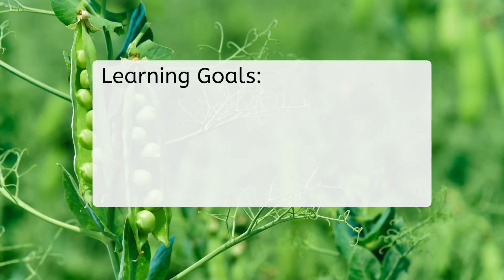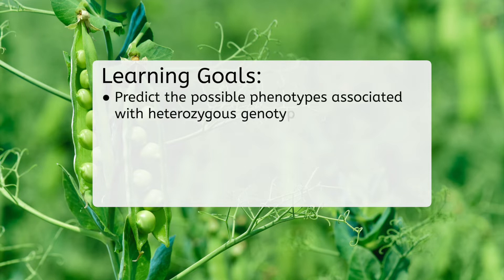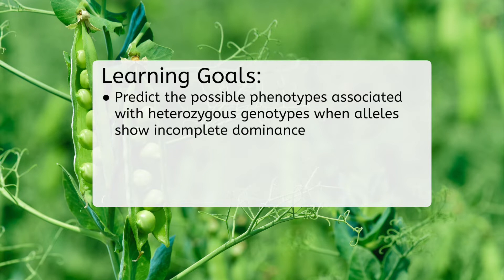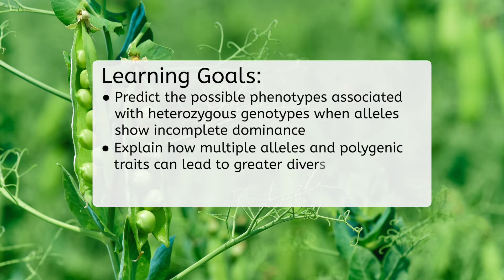Before we get started, let's look at our goals for this lesson. By the end you'll be able to predict the possible phenotypes associated with heterozygous genotypes when alleles show incomplete dominance, and explain how multiple alleles and polygenic traits can lead to greater diversity of phenotypes in organisms.